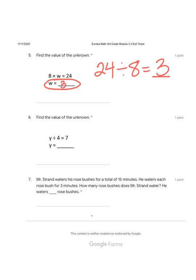Number 6, find the value of the unknown. In this problem, our unknown is Y. Y divided by 4 equals 7. All right, this is the same thing as saying 7 times 4 equals Y. Okay, do we know what 7 times 4 equals? That's the value of Y. Y equals 28.